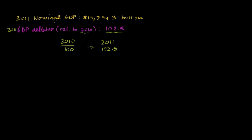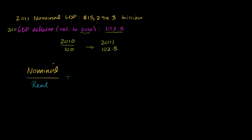Now we know what the nominal GDP is — the GDP measured in 2011 dollars, often called the current dollar GDP. We know what the deflator is. Can we figure out the real GDP in 2011? It will be the real GDP in 2010 dollars when we have the deflator relative to 2010. To do that, we just remember that the ratio between our nominal GDP and our real GDP is going to equal the ratio of our deflator — 102.5 — over 100.